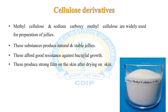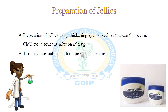Cellulose derivatives are semi-synthetic gelling agents including methyl cellulose and carboxymethyl cellulose, widely used for the preparation of jellies. These gelling agents produce neutral and stable jellies and also afford good resistance against bacterial growth. Cellulose derivatives produce a strong film on the skin after drying; sodium carboxymethyl cellulose is used for both lubricating jellies and sterile jellies.